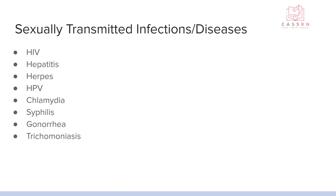We're going to start with sexually transmitted infections. We've got HIV, hepatitis, herpes, and HPV — chlamydia, syphilis, gonorrhea, and trichomoniasis. Chlamydia and gonorrhea are definitely the most common. HIV, hepatitis, herpes, and HPV are all viral ones — if it starts with an H, it's a virus, which obviously changes our treatment plan. The rest of them are bacterial, and trichomoniasis is actually a protozoa, so it's a different thing altogether.